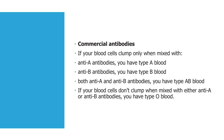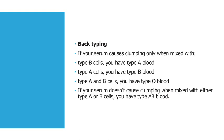Commercial antibodies results: if your blood cells clump only when mixed with anti-A antibody, you have type A blood. If they clump with anti-B antibody, you have type B blood. If they clump with both anti-A and anti-B antibodies, you have type AB blood. If your blood cells don't clump when mixed with either anti-A or anti-B antibody, you have type O blood.